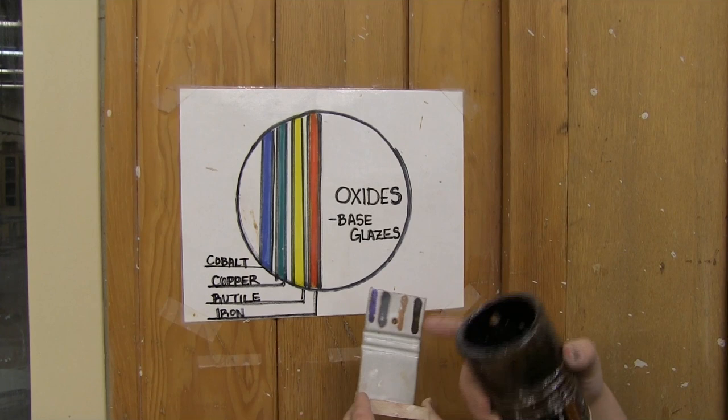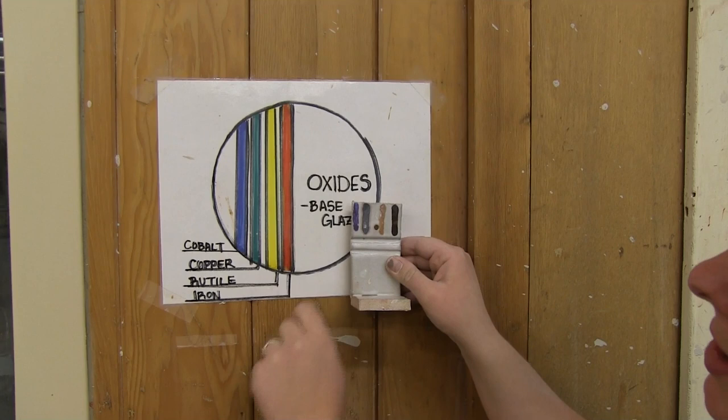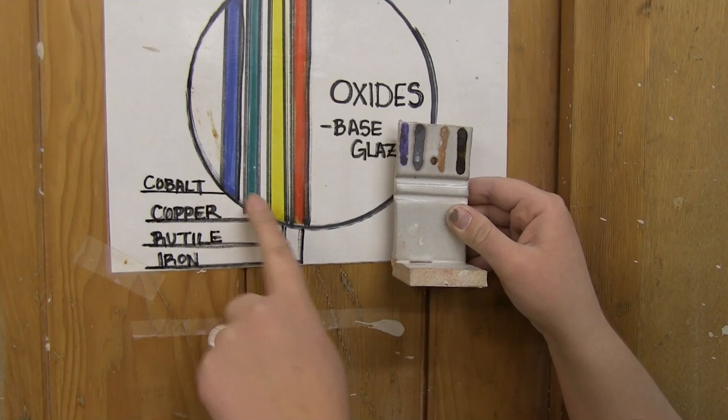Some of them are harder to see than others, so make sure you look really closely. These stripes correlate with these four oxides on top of the glaze. The first one here you can see is cobalt, and that's traditionally blues on most of the glazes when it shows up.